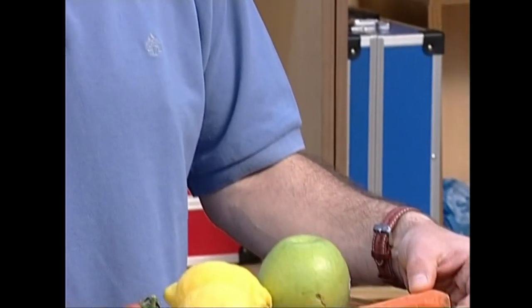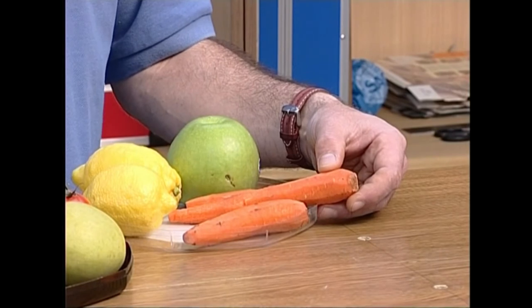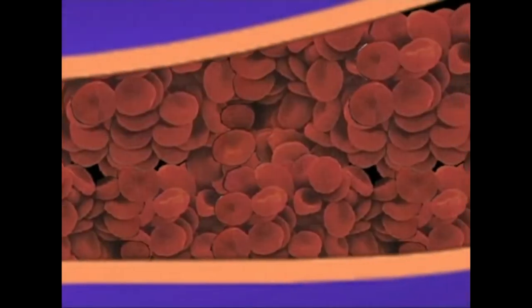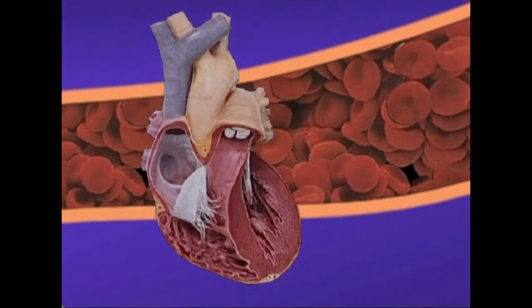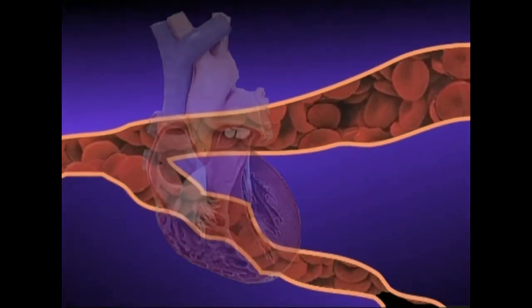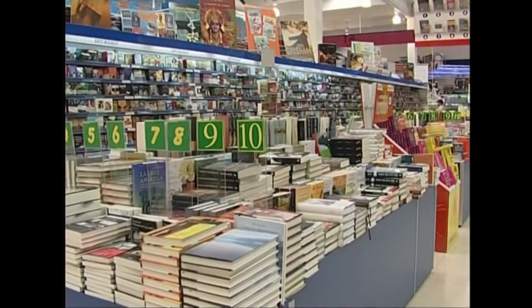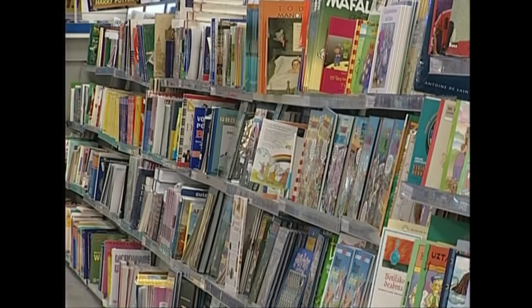Pigmentuak bizidunen zeluletan dauden partikula batzuk dira. Partikula hauek argi izpi batzuk xurgatu egiten dituzte, eta beste batzuk izlatu. Horregatik ikusten ditugu pertsonak zein gauzak kolore estatuta. Horrela, hazenarioaren pigmentuek, karotenoidez izenaz ezagutzen direnek, argi izpi urdin eta berde geienak xurgatzen dituzte, eta bakarrik gorriaren eta laranjaren eremukoak izlatzen. Odolaren kolore gorria hemoglobina deitzen den pigmentu bati sortzaio. Beste gauza batzuk bestelako pigmentuak izaten dituzte, eta beste argi izpi batzuk xurgatzen dituzte eta beste batzuk izlatzen. Izlatzen dituzten argi horiei ezker, ikusten ditugu onelako edo alako koloreko.